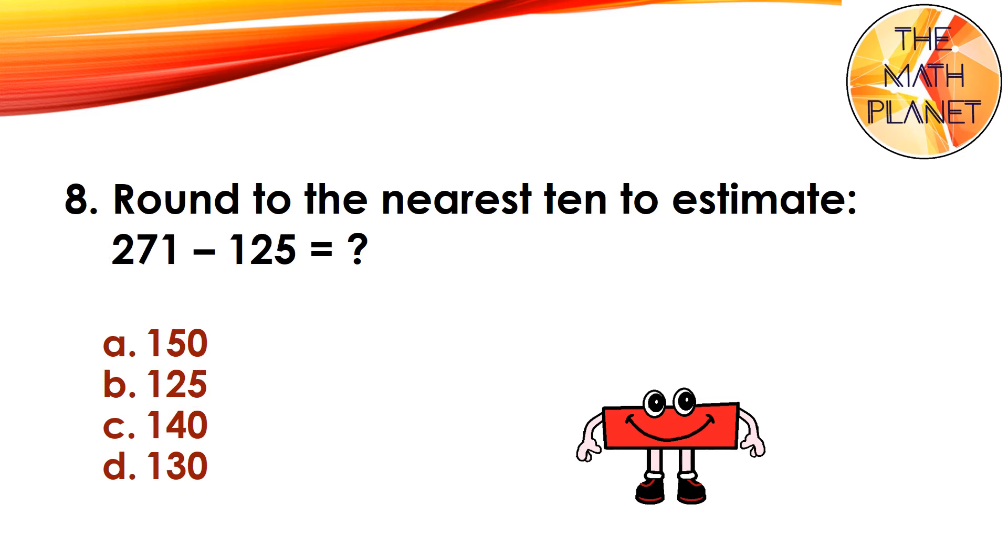Question 8. Round to the nearest ten to estimate 271 minus 125. The correct answer is C because 270 minus 130 equals 140.